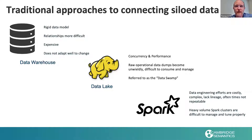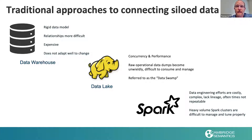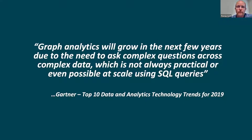An anecdotal story from a large telco customer: they said we can give two data scientists the same problem and they'll come back with two different answers. The reason is because of the complexity of where the data comes from, the rules to combine, and the data quality rules that they need to get those answers — they're always different. So how do we create a repeatable way to get the answers that we need?